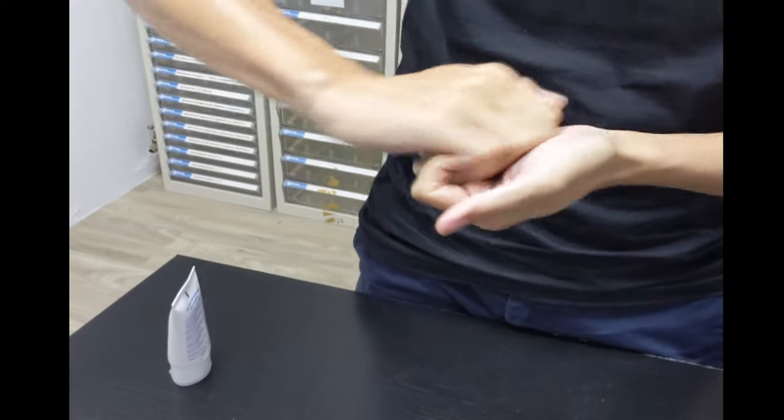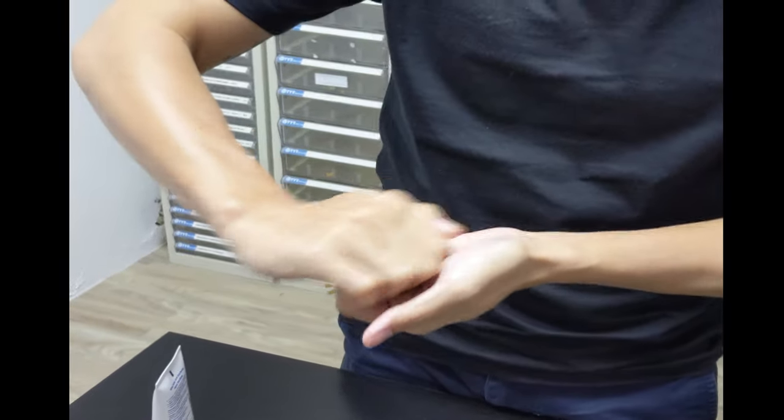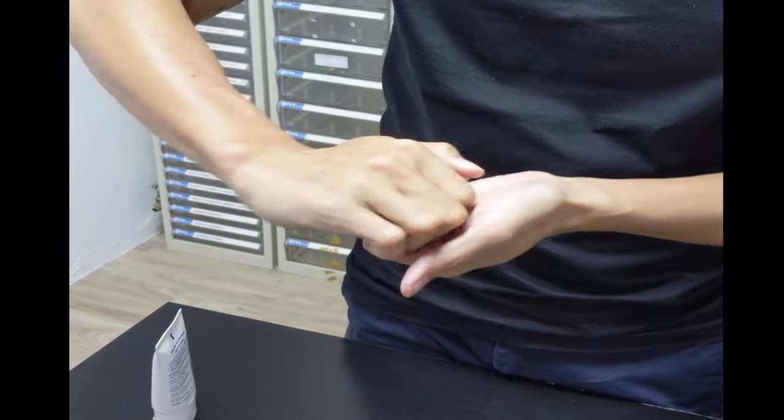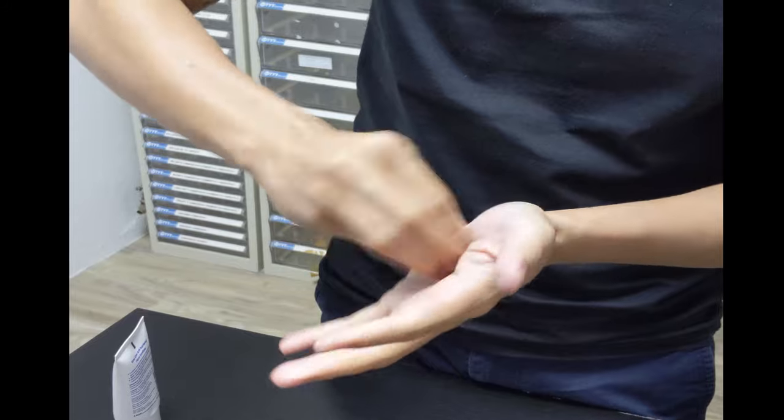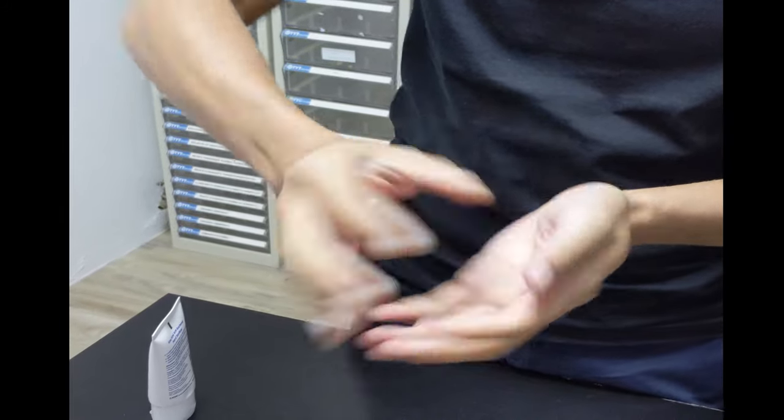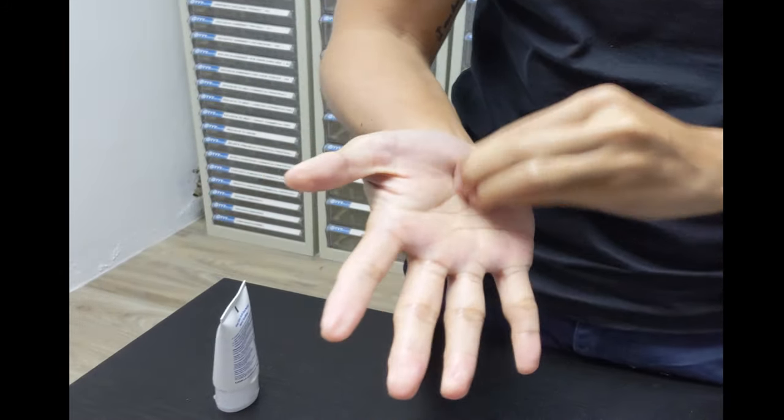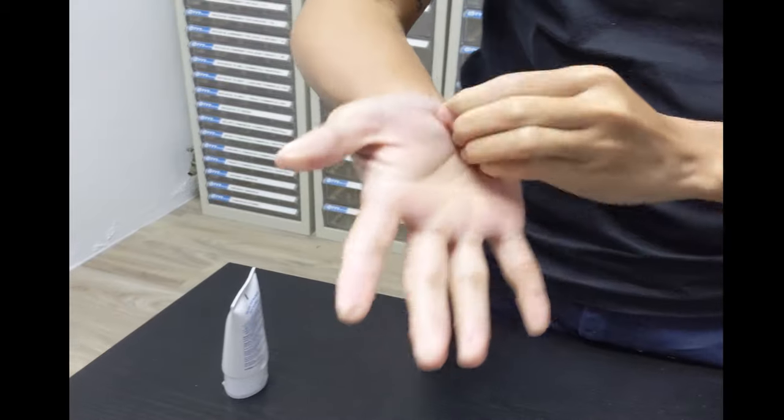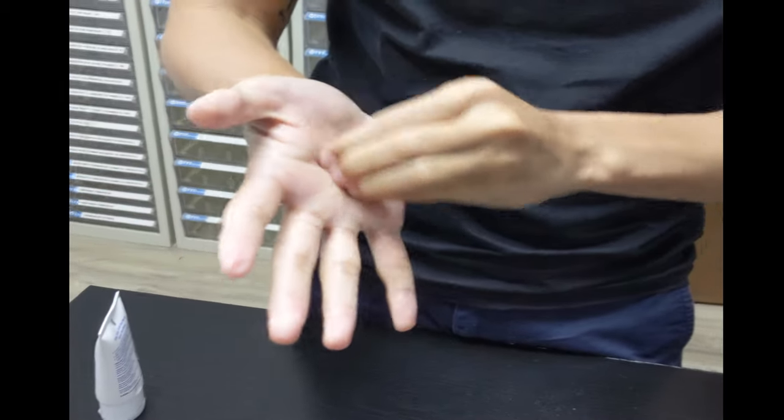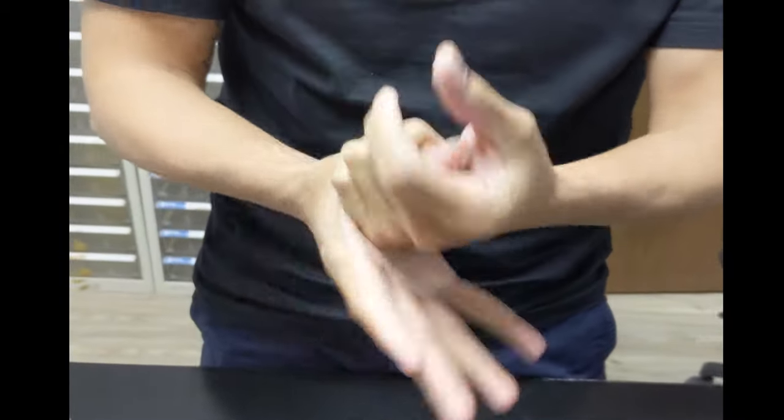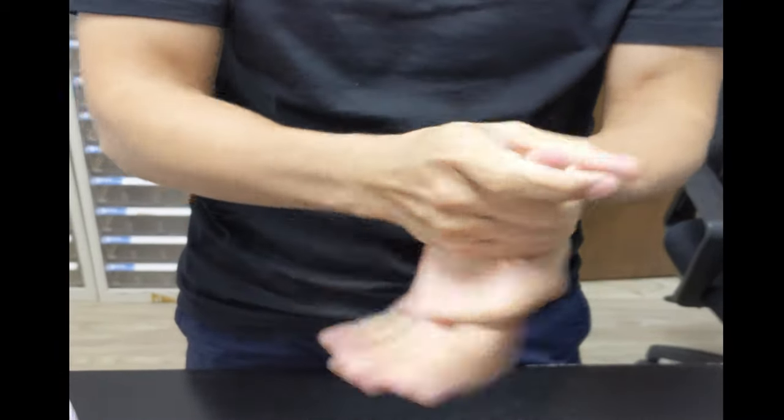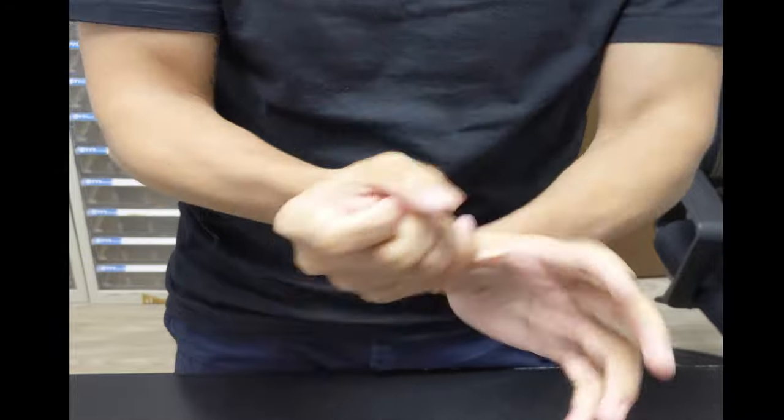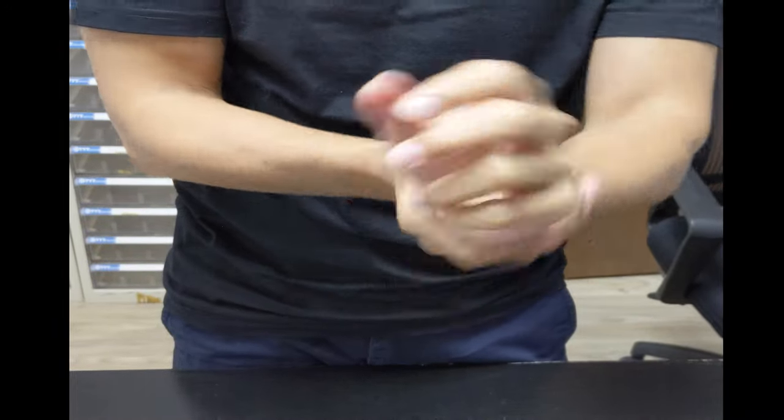And then after that, you have to do your fingers. Then you have to clean out your fingernails entirely. You can either do a rotating motion or you can do it this way as well. Second to last will be your thumbs. Most people forget this step. And the last one, of course, is your wrist.